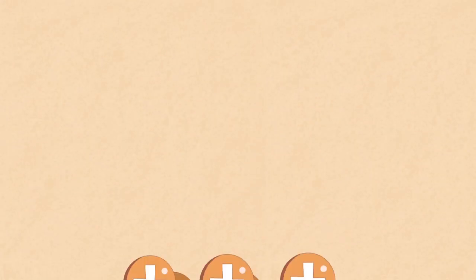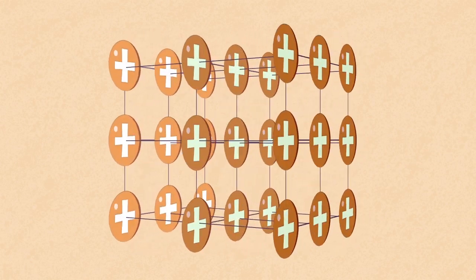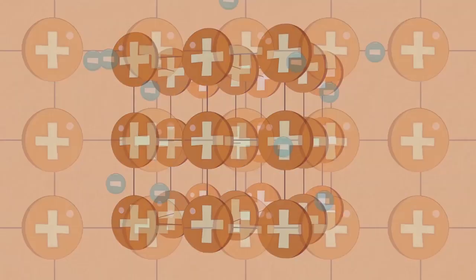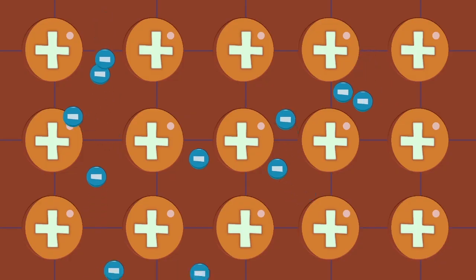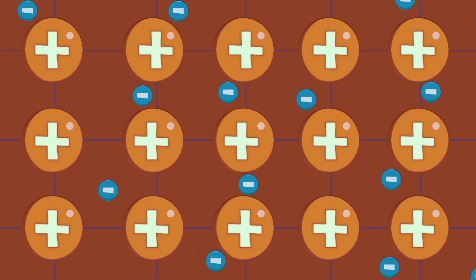In summary, metals contain lattices of positively charged ions. The electrons are loosely held and are free to move between the metal atoms. When a voltage is applied, a current is able to flow.